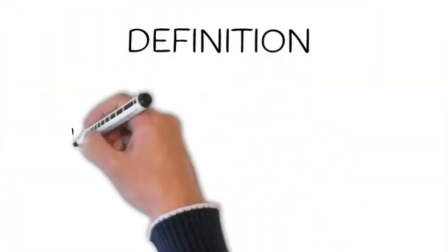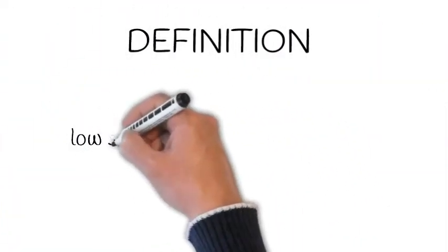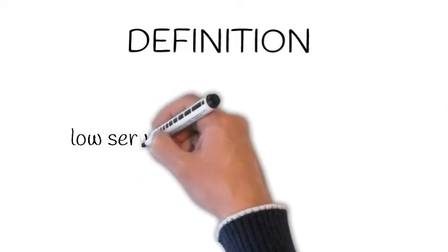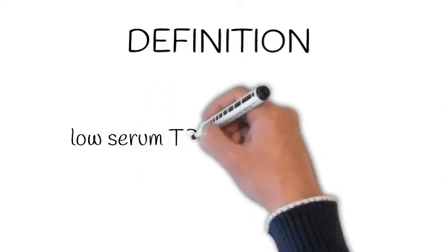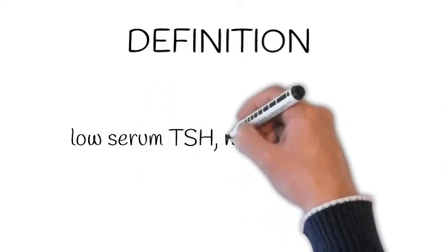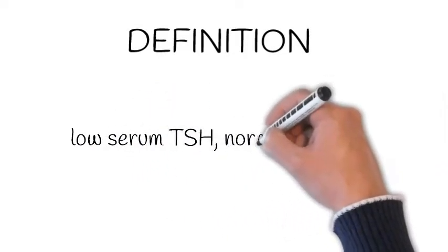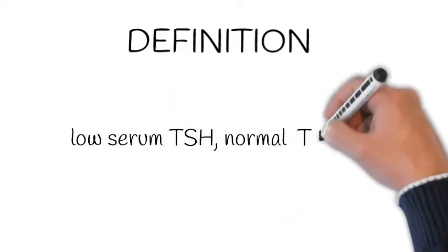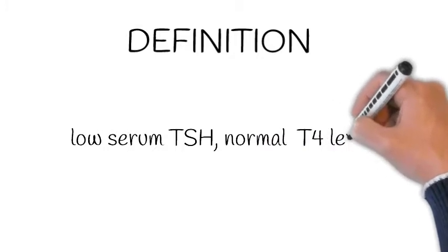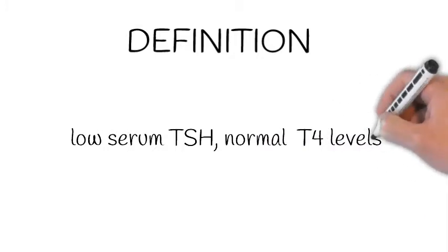Definition. Subclinical hypothyroidism is defined by a low or undetectable serum TSH level, with normal free T4 level.